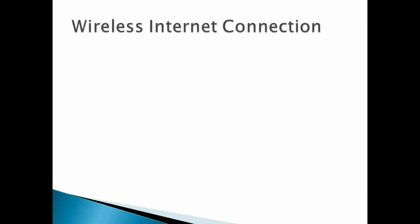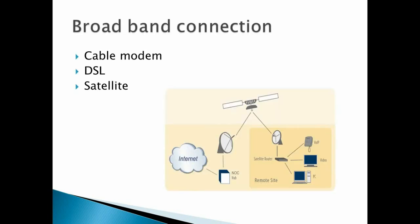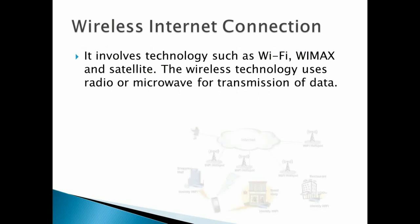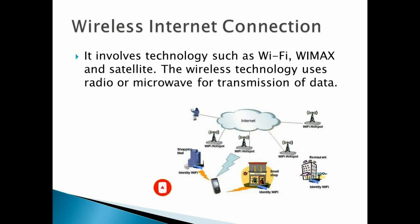Wireless internet connection — earlier broadband and dial-up connections were all wired. For wireless internet connection we can use technologies like Wi-Fi, WiMAX, and satellite. Wireless technology uses radio or microwave transmission of data. In wired satellite connection, wires from satellite routers are connected to the computer, but in wireless satellite connection they are directly connected to mobile phones — signals go from satellites to towers and from towers to your mobile phone. Wi-Fi connections are also available as wireless internet connections using radio waves or microwaves for data transmission.